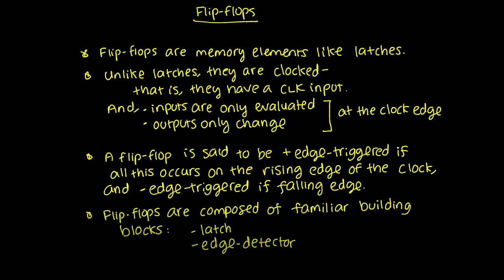A flip-flop has to choose a lane — it's got to be one or the other. The outputs can only change once per clock cycle, depending on what the inputs are at that time. We can build flip-flops based on familiar building blocks we've already seen, such as the NAND latch and edge detectors. We've seen both positive and negative edge detectors, and we understand the latch from the last video.